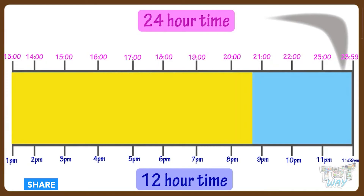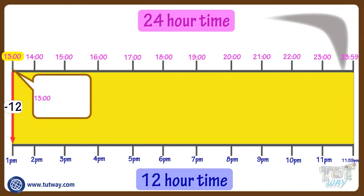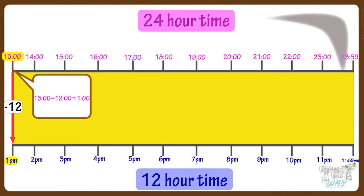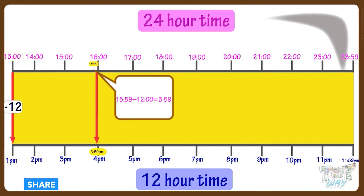Between 13 and 23:59 in the 24-hour clock system, we subtract 12 hours to get the time in p.m. For example, if it's 13 o'clock, subtract 12 and you get 1:00 p.m. If the time is 15:59, subtract 12 and you get 3:59 p.m.